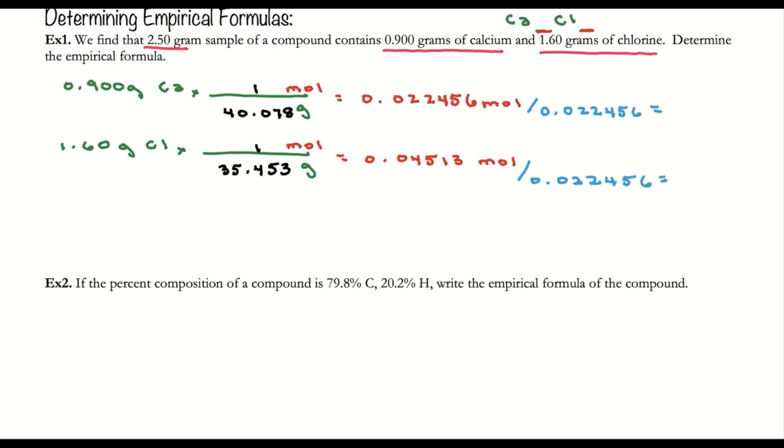When I divide 0.022456 by itself, I get one. When I divide 0.04513 by 0.022456, I get 2.0097, which I can round to two. My formula is CaCl2, and that's my empirical formula for calcium chloride.